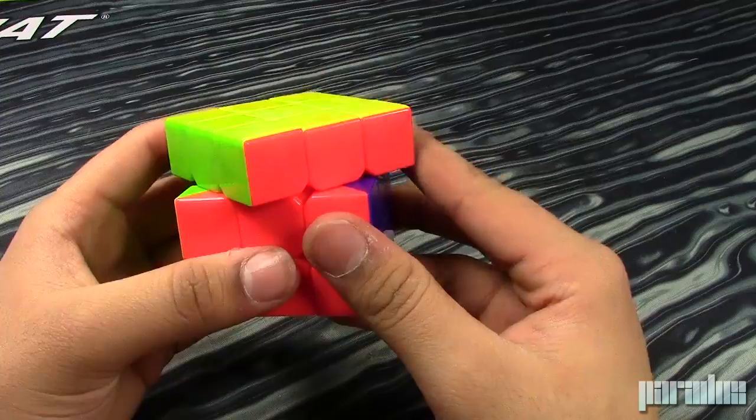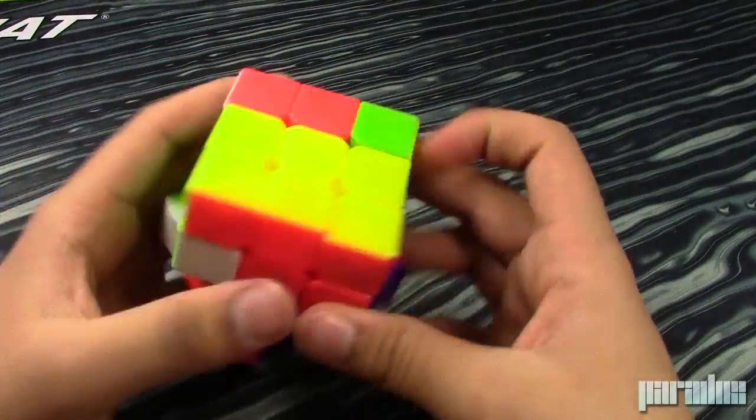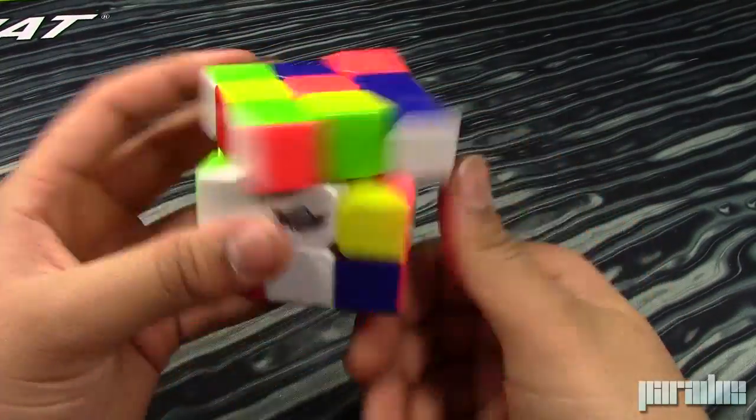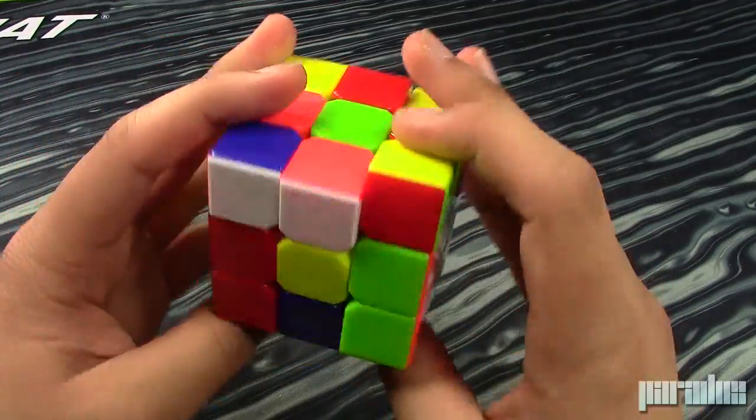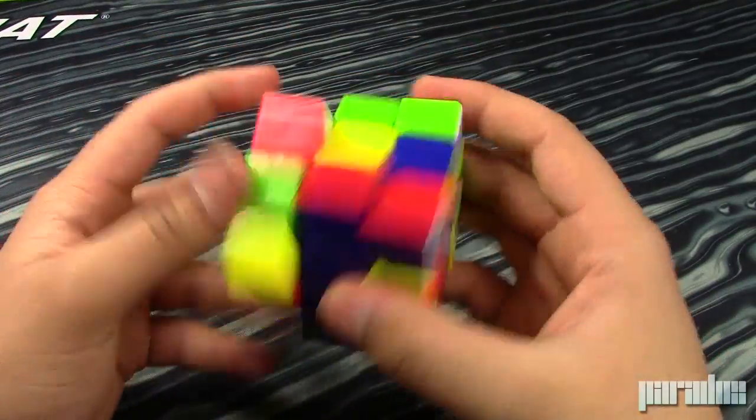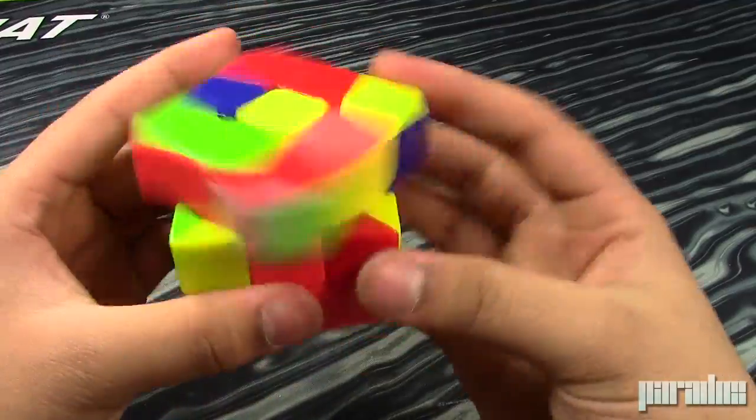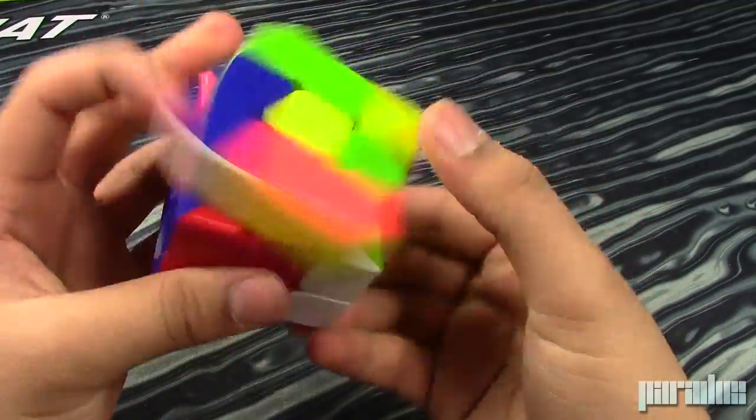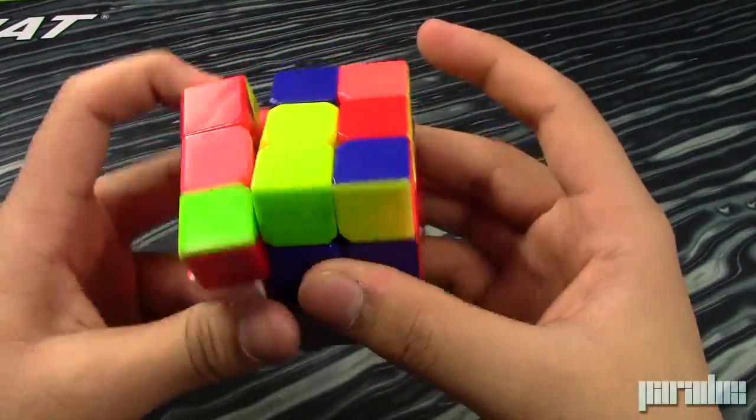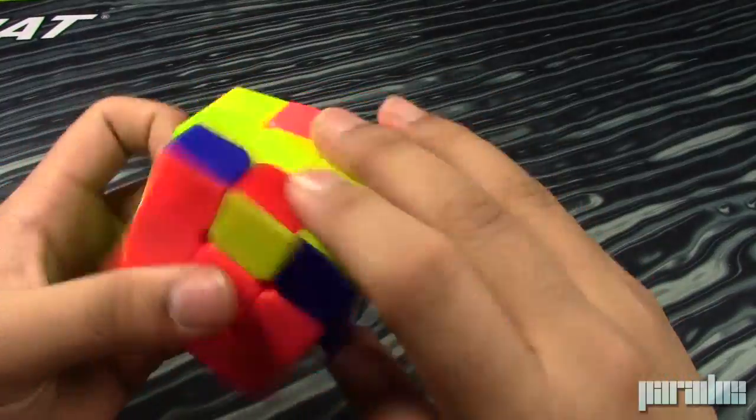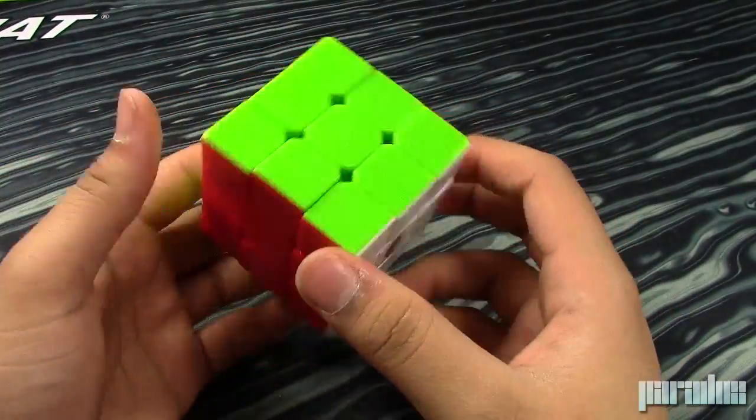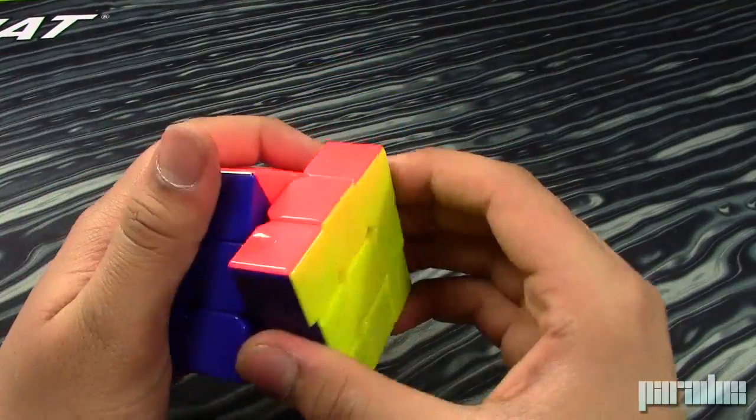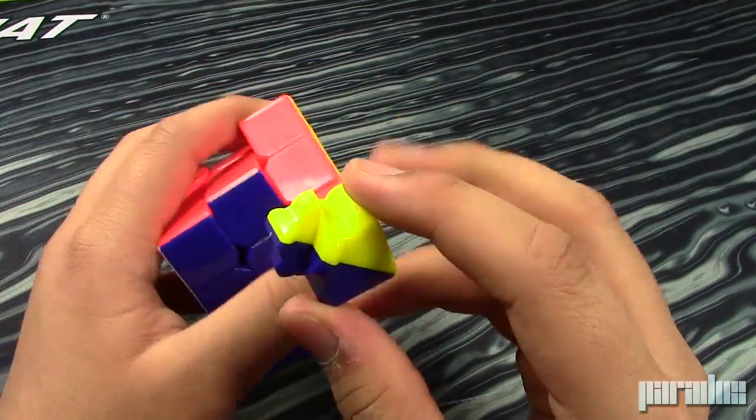It tends to lock up. It can't cut 45. So if you're not a very accurate turner, then the cube will have some problems. It'll lock up and stuff. So you can see that it locks up quite a bit. It's a good cube. It turns well, but it just locks up quite a bit.